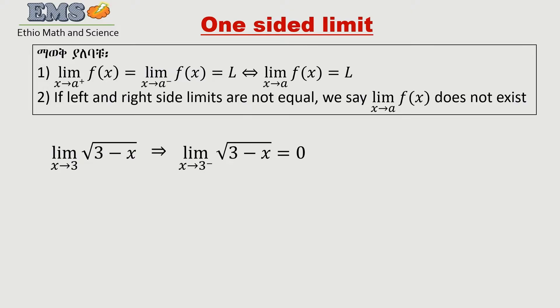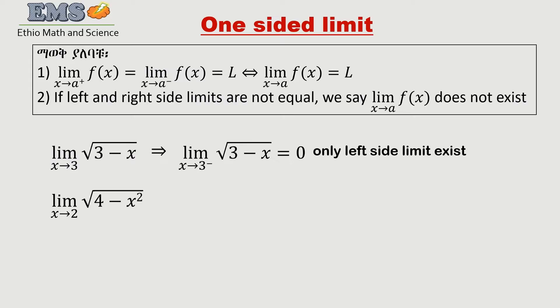The square root of a negative number is undefined. So only the left-side limit exists here; the right-side limit does not exist. Therefore, only the left-side limit has a value — the right-side limit gives an error.